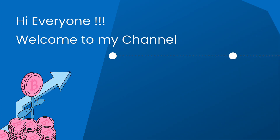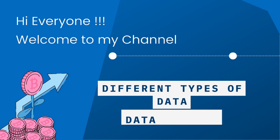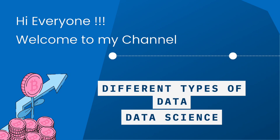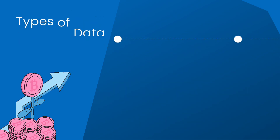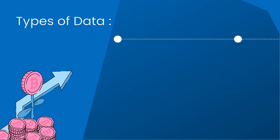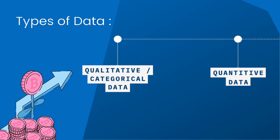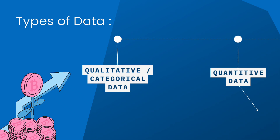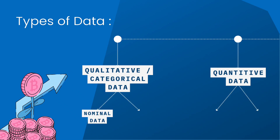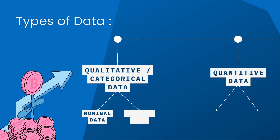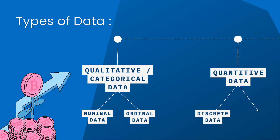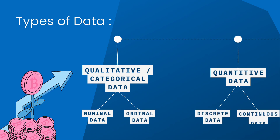Hi everyone, welcome to my channel. In this video we will see and understand different types of data. In data science there are basically two types of data: one is qualitative or categorical data and the second one is quantitative data. Further, this is classified into four categories: nominal data, ordinal data, discrete data, and continuous data.